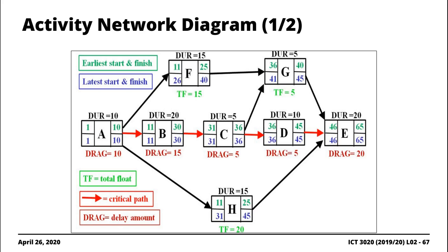The activity network diagram is a useful graphic used to represent the project schedule. It is typically used to determine the critical path associated with the project, compute the total duration of the project, and more importantly, the different slack values associated with the various activities or tasks. Sometimes the slack is referred to as float or total float, so TF here would be the slack value.